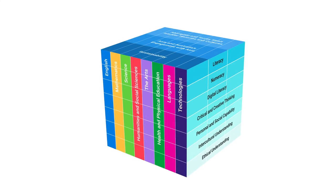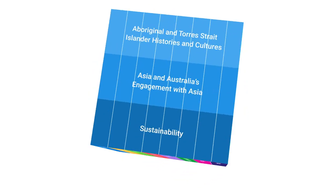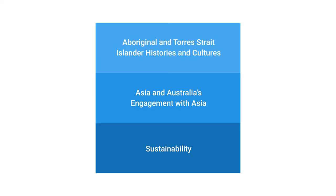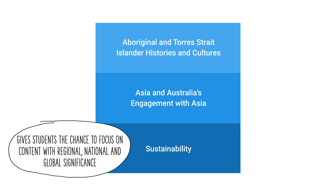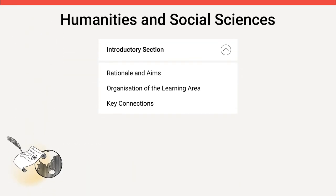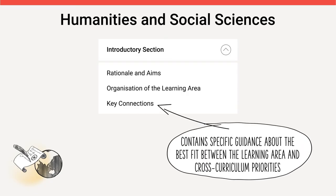The cross-curriculum priorities that make up the third dimension of the Australian Curriculum ensure that content is current and relevant. These priorities give students the chance to focus on content with regional, national and global significance. Each learning area's key connections section has advice on which cross-curriculum priorities have strong relationships. The priorities will be embedded into the content where they provide the most authentic and meaningful contexts to add depth to the learning area content.